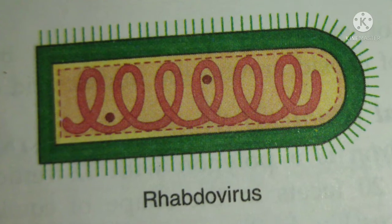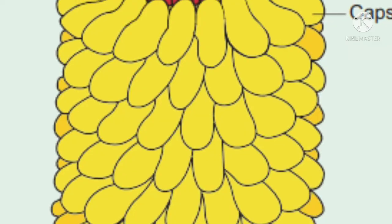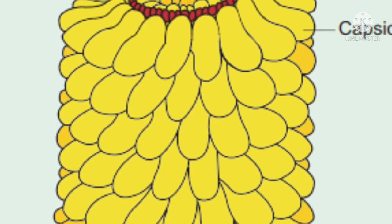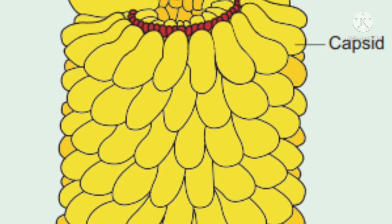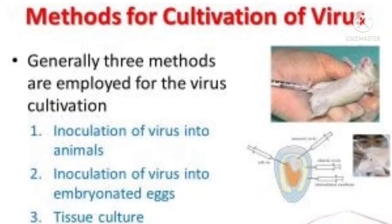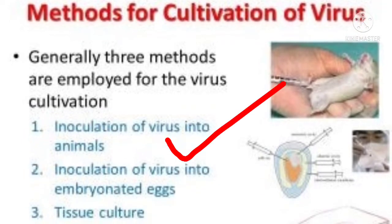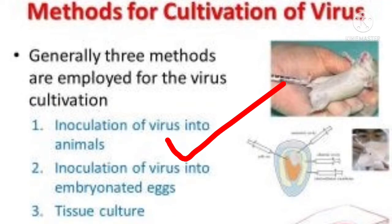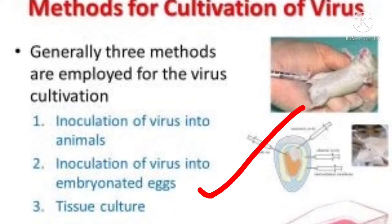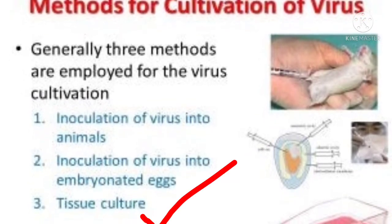Cultivation of viruses: three methods are employed. First is animal inoculation, second is embryonated egg inoculation, and third is tissue culture.